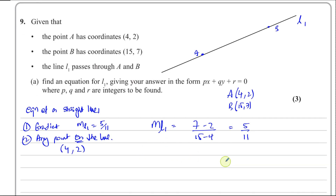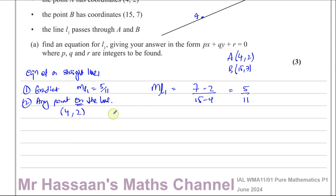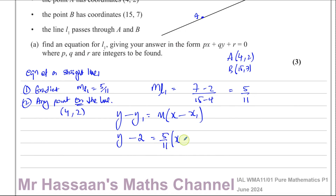So we want to find the equation of line L1. I'm going to use the formula y − y1 = m(x − x1). So: y − 2 = (5/11)(x − 4). To get rid of the fraction, I'll multiply both sides by 11: 11y − 22 = 5(x − 4), which gives 11y − 22 = 5x − 20.